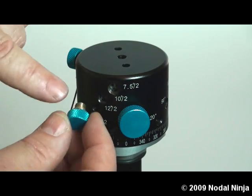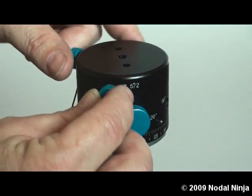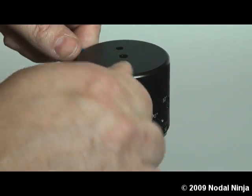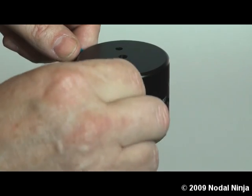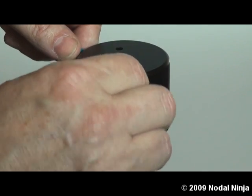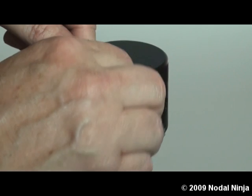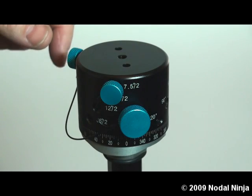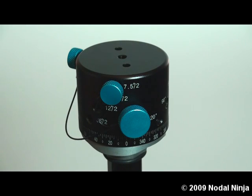This means if you put each of the two detent plungers in the 7.5-degree hole, it will divide the detent variable of that hole in 2, giving you 3.75-degree click stops.